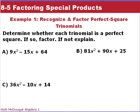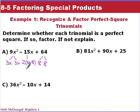Now we need to determine first if these are perfect square trinomials, and then factor. For Example A, we check if A is a perfect square: 9x² factors into 3x and 3x, and 64 is a perfect square that factors into 8 and 8. Now our B term has to be 2 times the product of A and C, which would be 2 times 3x times 8 = 48x. So no, that is not a perfect square trinomial.